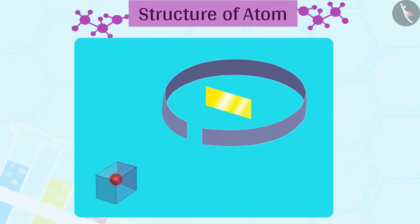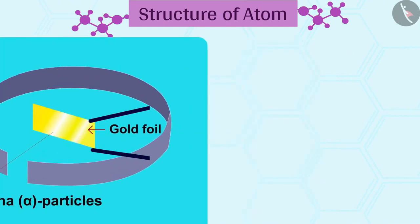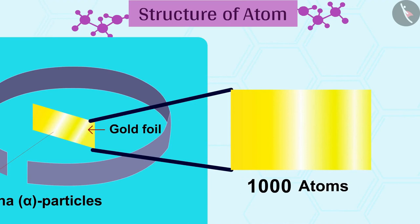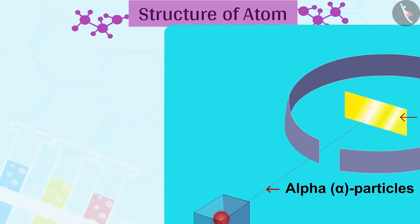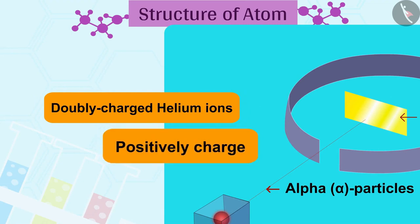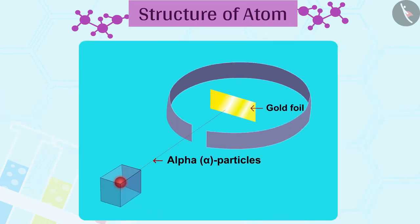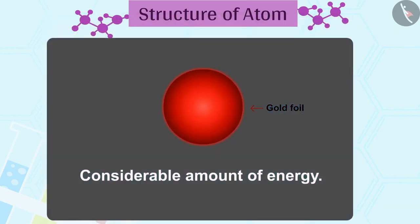In this experiment, fast-moving alpha particles were made to fall on a thin gold foil. He selected a gold foil because he wanted as thin a layer as possible — this gold foil was about 1,000 atoms thick. Alpha particles are doubly charged helium ions and they are positively charged; since they have a mass of 4u, the fast-moving alpha particles have a considerable amount of energy.